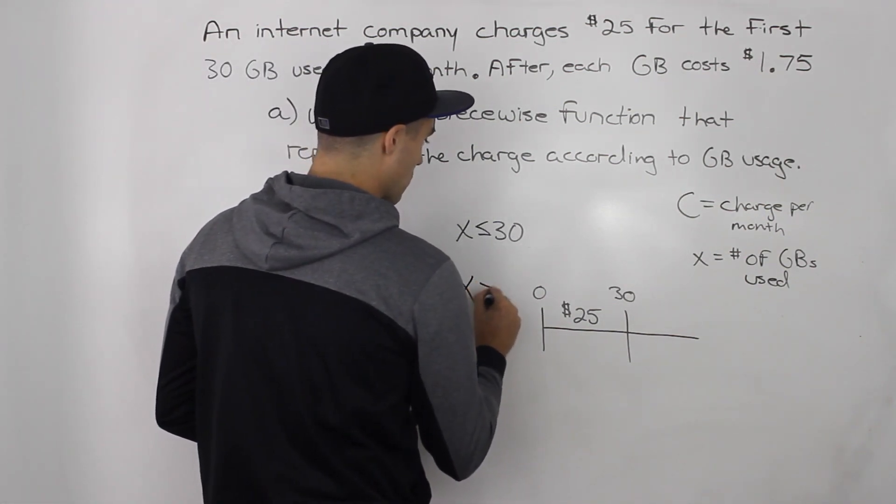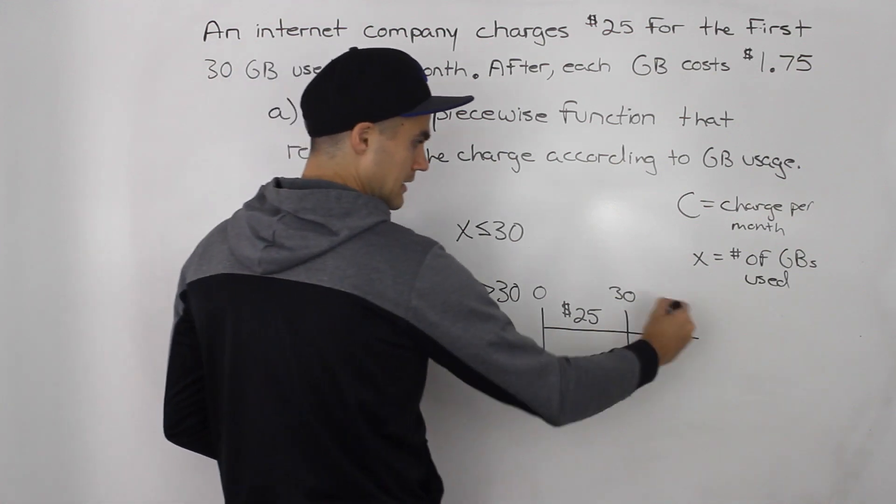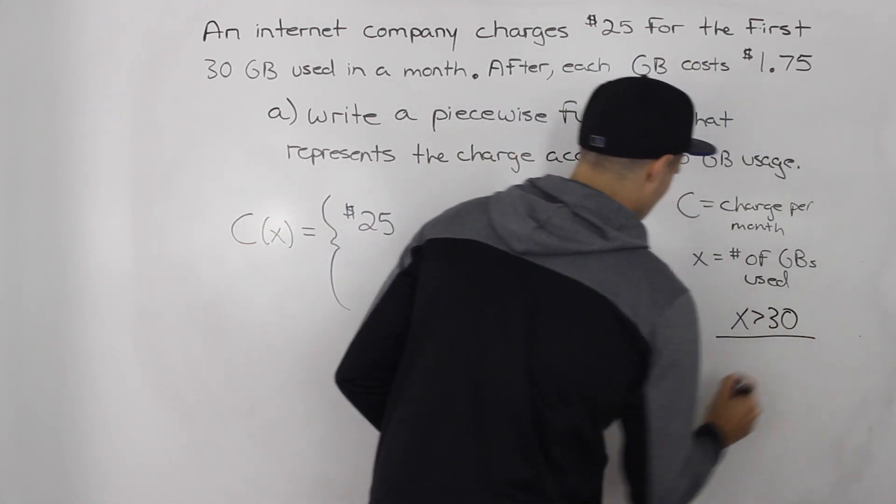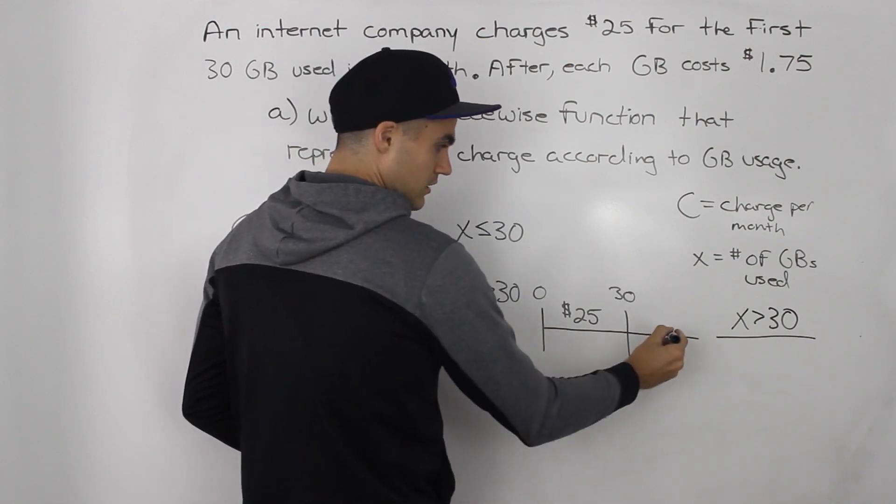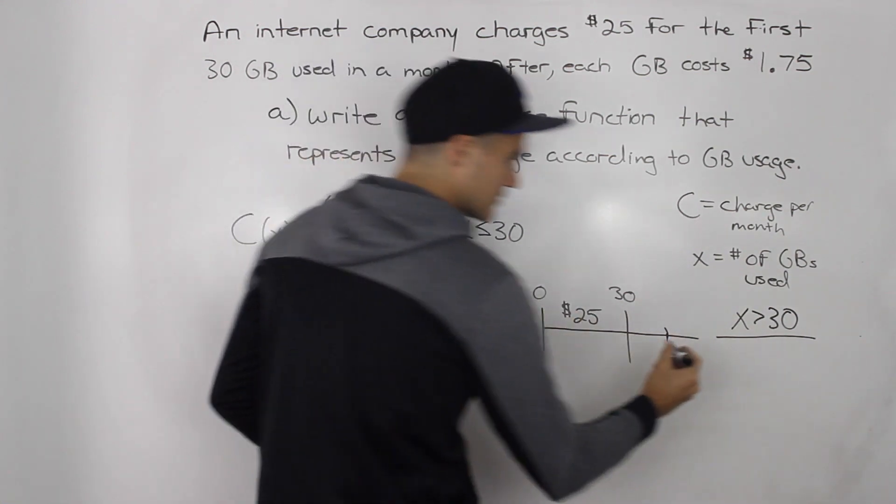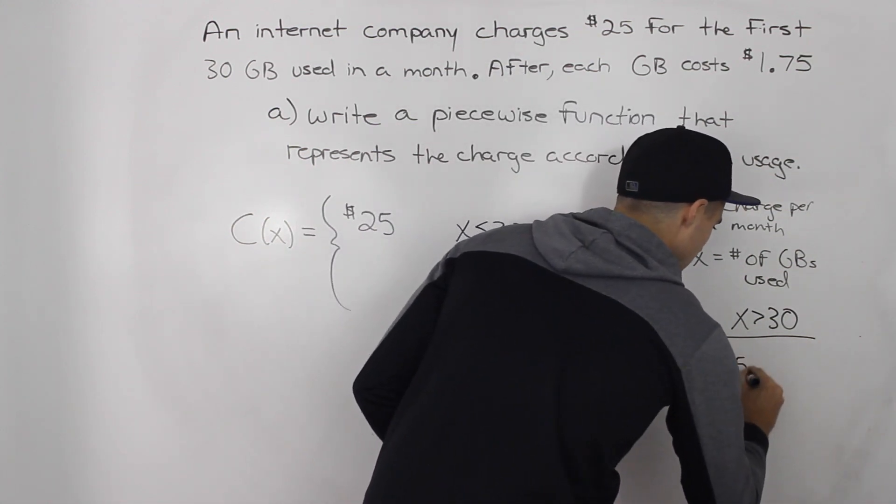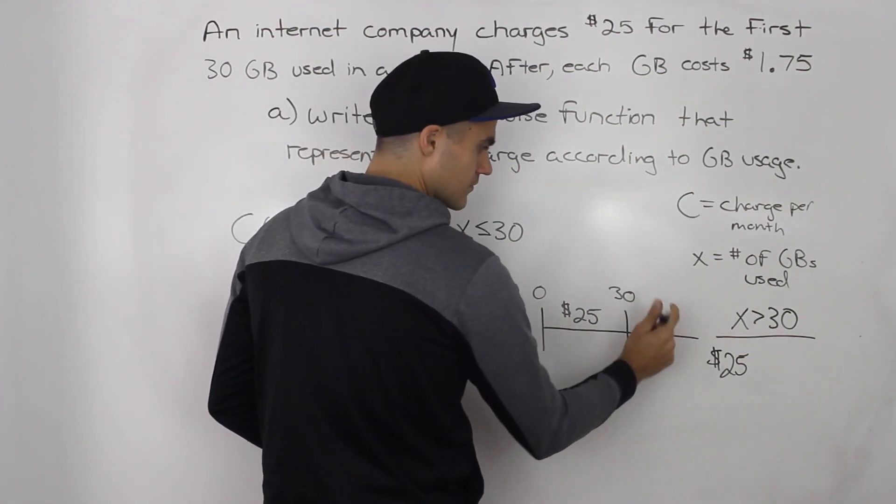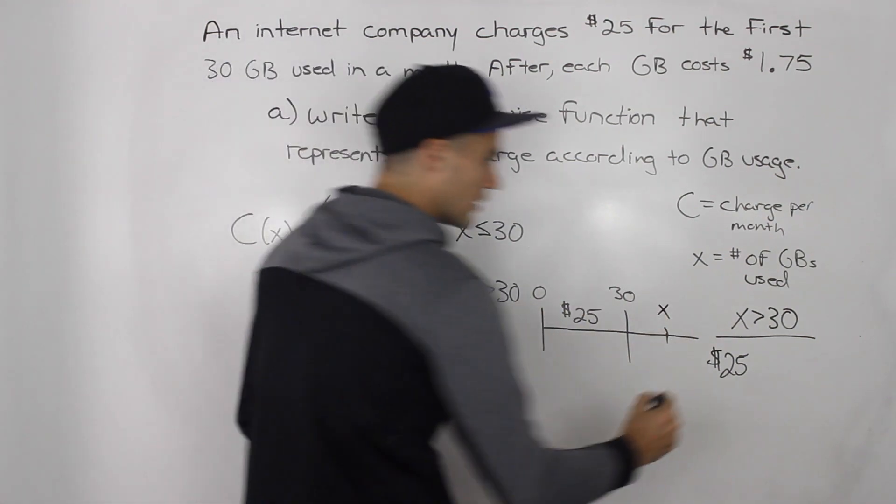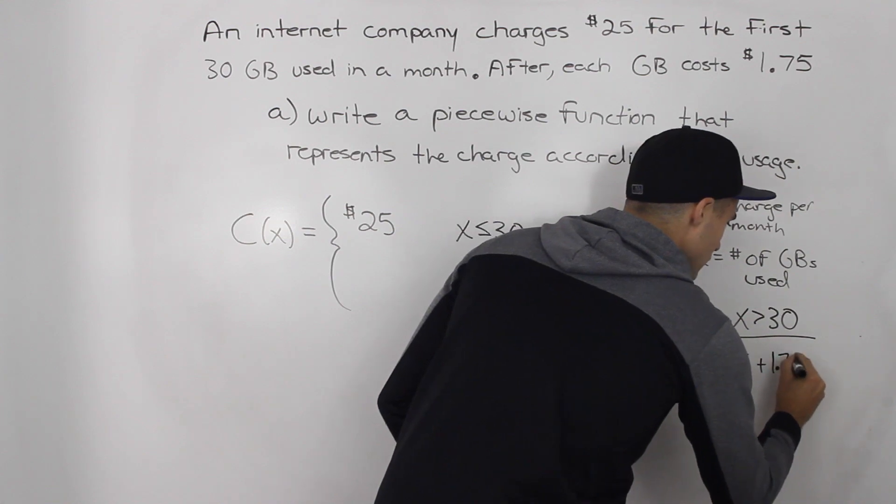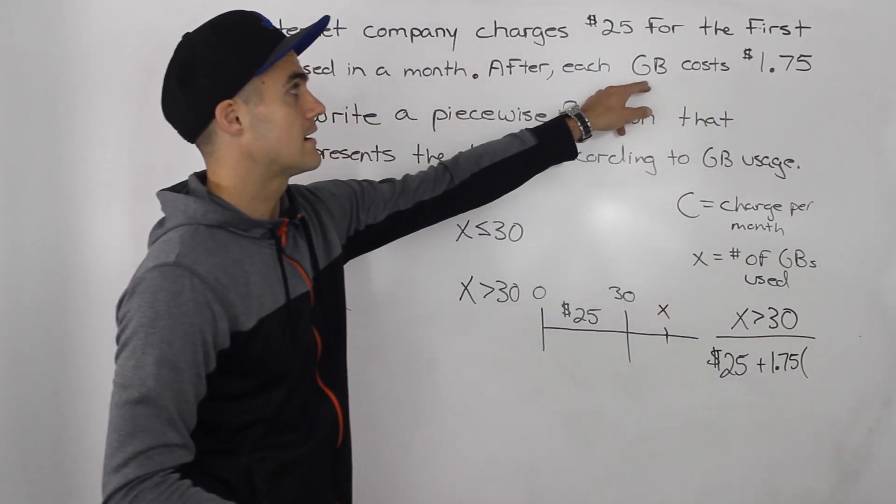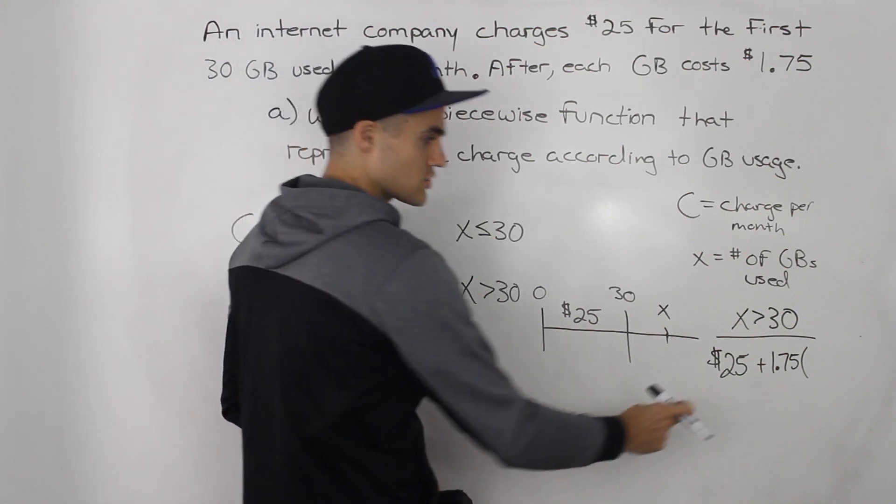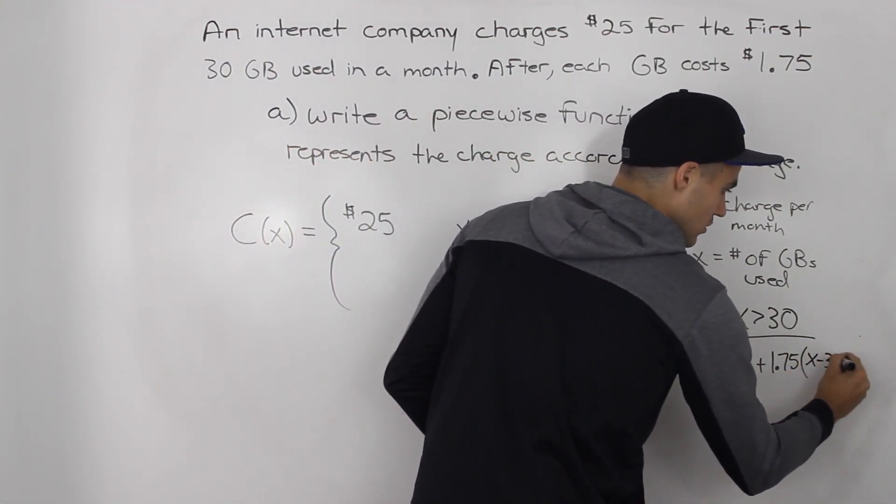Now what about if you use more than 30 gigabytes? What's going to happen in this portion? Well, if you're using more than 30 gigabytes, so let's say somewhere over here, you're still going to be charged this $25 for the first 30. That's like a fixed cost for that first 30. But now this portion here, let's say you use X and X is greater than 30, you're going to be charged $1.75 per extra gigabyte. But this extra gigabyte is going to be the number of gigabytes after 30 gigabytes. So you're going to be charged $1.75 for all the gigabytes after 30.